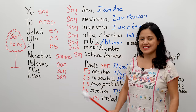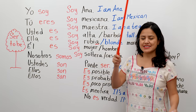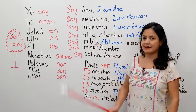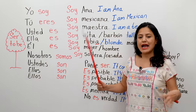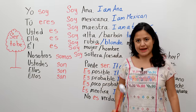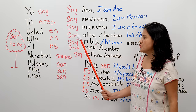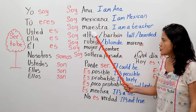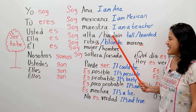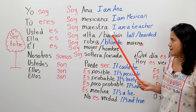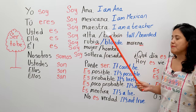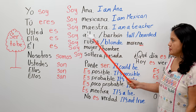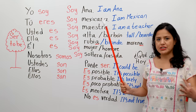Soy maestra. So 'soy' helps you say your profession, your trade. Soy maestra. If I were a plumber, I would be 'soy plomera.' If I were a man, I would say 'soy plomero,' or 'soy maestro.' And this A — 'maestra' — but it could be 'maestro,' or 'plomero' — plumber. 'Ingeniero' — engineer. So you could say your profession, your trade.